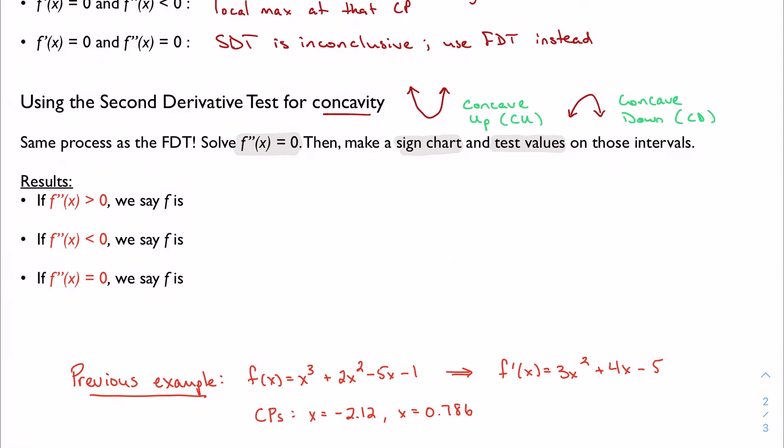I'm going to go through the results this time before we actually go through the example. When we make our sign chart and we test our values, if we test a value and we get a positive second derivative, then F is concave up on whatever that open interval is. So again, it's still an open interval, not a closed interval.